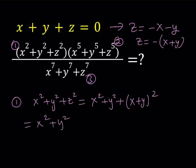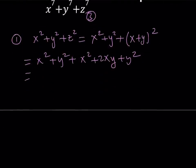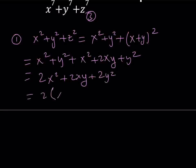x squared plus y squared plus x squared plus 2xy plus y squared. When you add like terms, you're going to get 2x squared plus 2xy plus 2y squared, and that can be written as 2 times the quantity x squared plus xy plus y squared. That is my first expression.